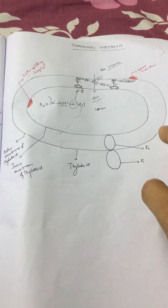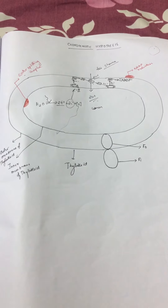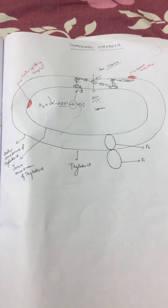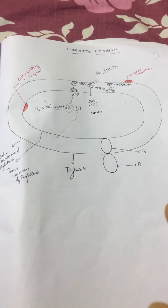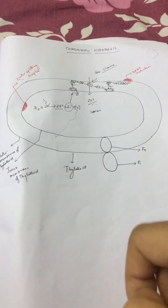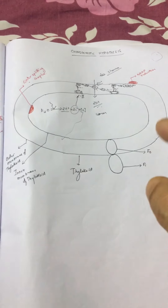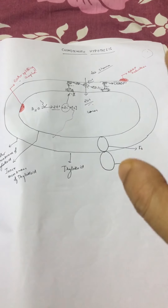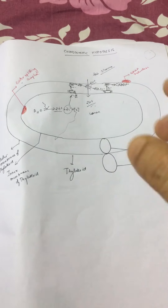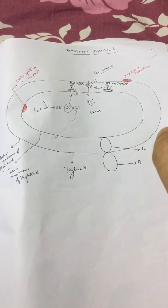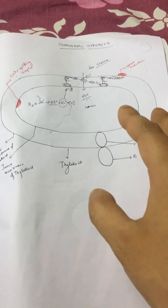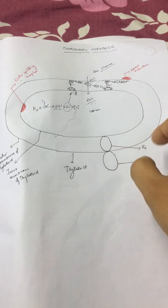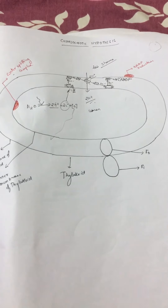In the previous video we discussed about the light reaction — cyclic and non-cyclic photophosphorylation. In non-cyclic photophosphorylation, energy is released at the cytochrome complex, and that energy is used in the combination of ADP with inorganic phosphate to form ATP. This is a complex step, and the formation of ATP at the cytochrome complex is explained by the chemiosmotic hypothesis.